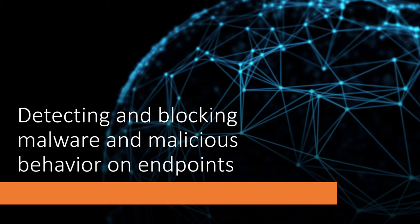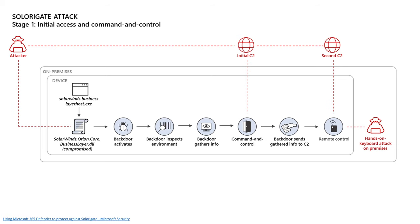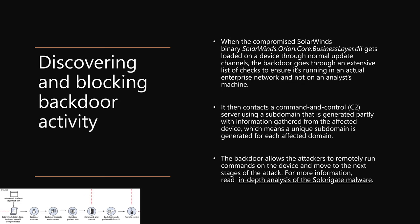We've talked about detecting — let's get more into detecting and then jump into blocking the malware and any other malicious behavior on endpoints. Before that, let's look at the kill chain for this attack. In stage one, malicious binaries introduce backdoor activity, the malware inspects the environment to confirm it's running in a real enterprise environment, establishes command and control with a C2 server, sends information back, and allows the attacker to gain remote control. So discovering and blocking backdoor activity: when compromised SolarWinds binaries get loaded through normal update channels, the backdoor goes through an extensive list of checks to ensure it's running on an actual enterprise network and not a SOC analyst's machine.